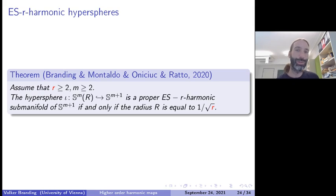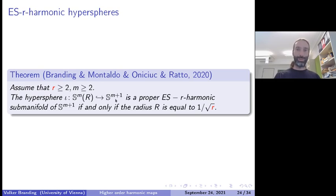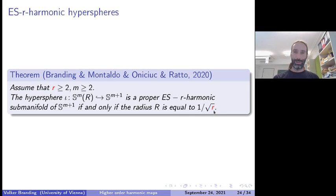Let me show some results we obtained on ESR harmonic maps. If r is bigger than 2 and the dimension is also bigger than 2, then a small hypersphere of radius r immersed into a Euclidean sphere of one dimension larger is a proper ESR harmonic submanifold if and only if the radius equals 1/sqrt(r). Recall the analogous result for biharmonic maps had radius 1/sqrt(2), consistent with r=2 in this formula. This was obtained in collaboration with Stefano Montaldo, Cesar Oniciuc, and Andrea Ratto.